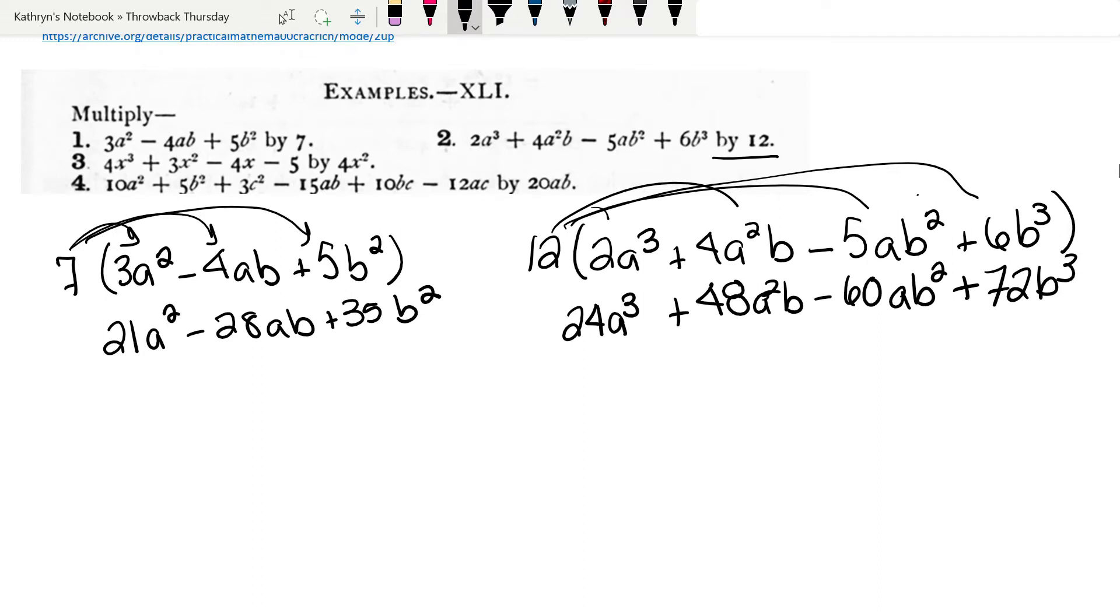Now for this one, let's double check we don't have anything in common that we can put together. I have an a³, no other a³s. I have a²b. Now when I look at this one, this is ab². So those are not common. They're not like terms. And then we end up with a b³. So that turns out to be our solution, our answer.